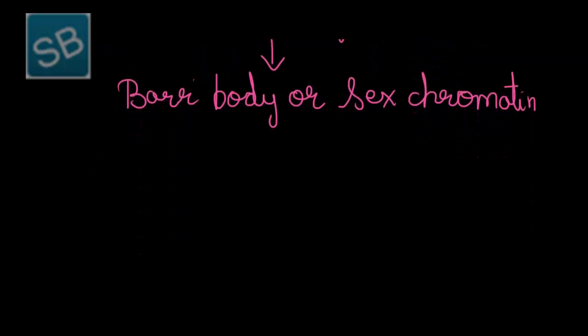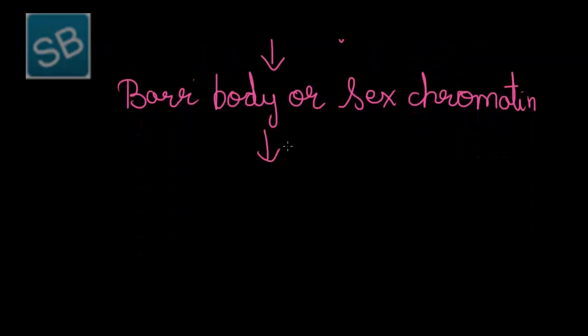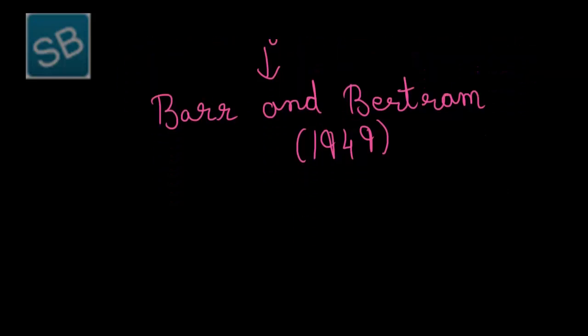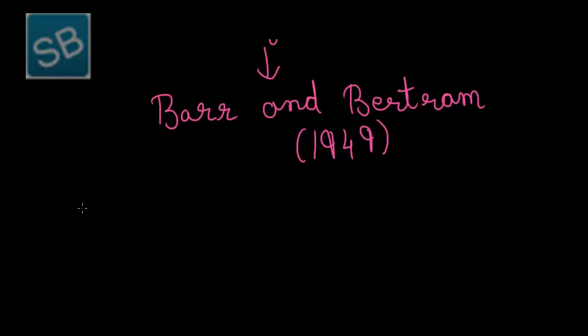This step was first discovered by scientists named Barr and Bertram in the year 1949. This helped in identifying the sex of the animal. Now, the number of Barr bodies is always less than the number of X chromosomes. This is the most important factor for identifying it.